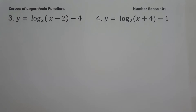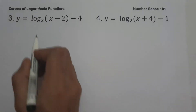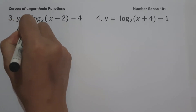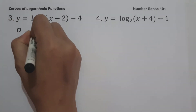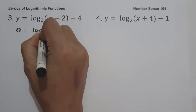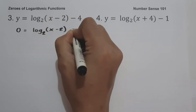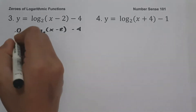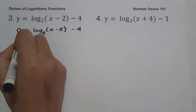On example number three: y equals log base 2 of (x − 2) minus 4. To find the zero of the given function, let us equate the function equal to zero. So we have zero equals log base 2 of (x − 2) minus 4. Let us move negative 4 to the side of zero, giving us 4 equals log base 2 of (x − 2).